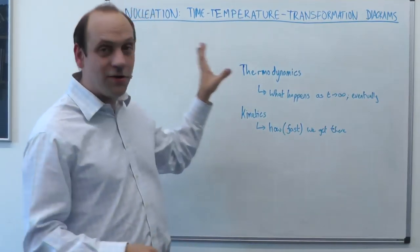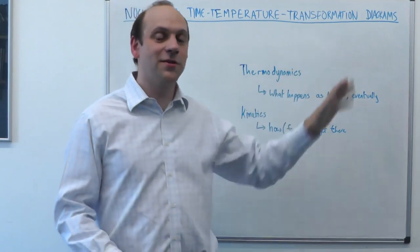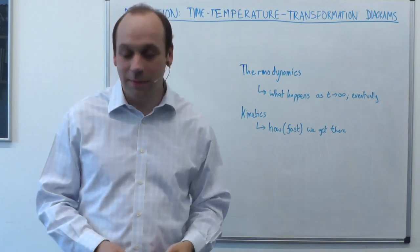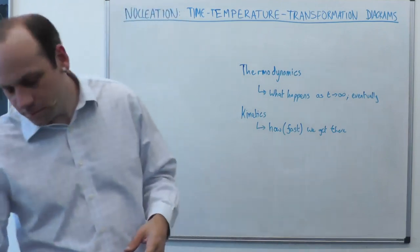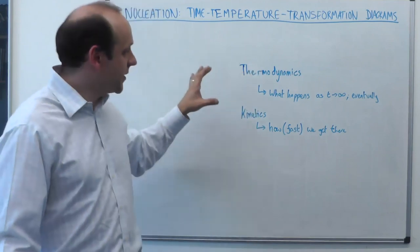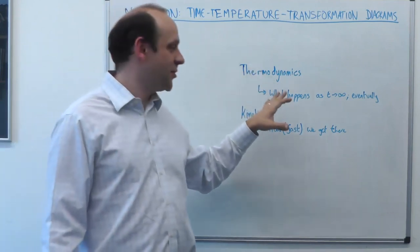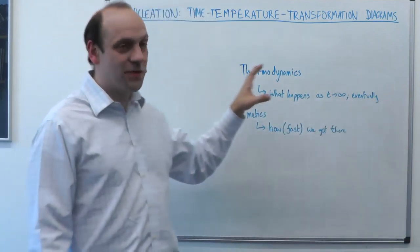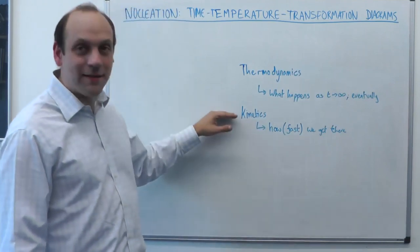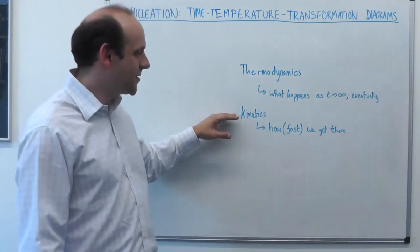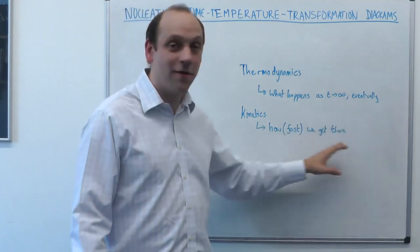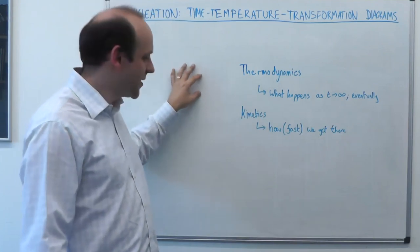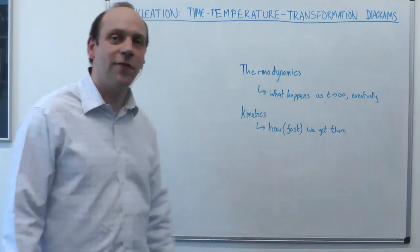This segment is about nucleation or time-temperature transformation diagrams, which show how long it takes for nucleation to occur at different temperatures. A lot of what we've studied is thermodynamics — what happens as temperature goes to infinity, i.e., what the eventually stable state will be. Kinetics is a complementary study about how we get there or how fast we get there, from one state which is no longer stable, towards our final stable state.